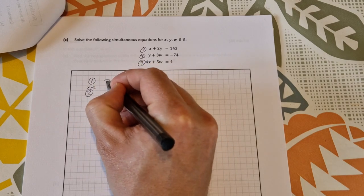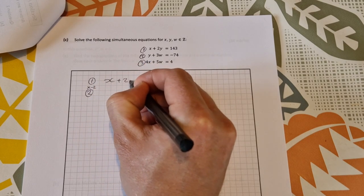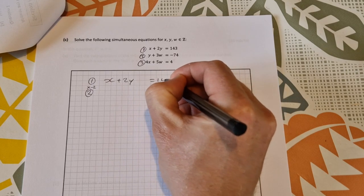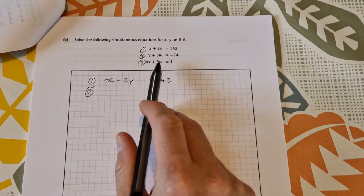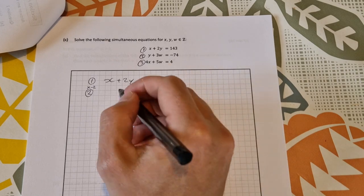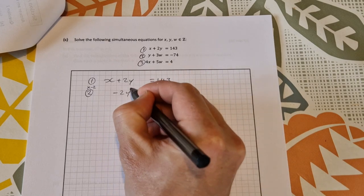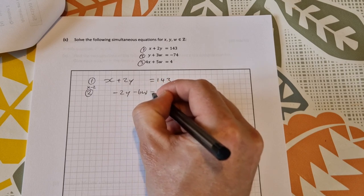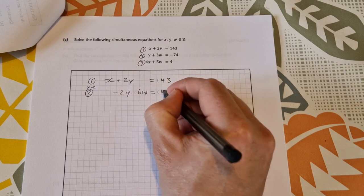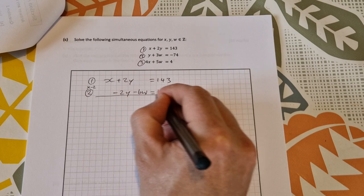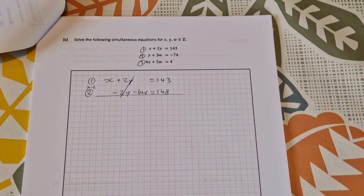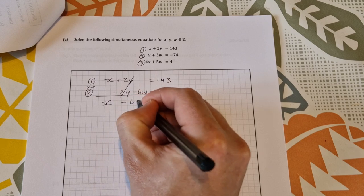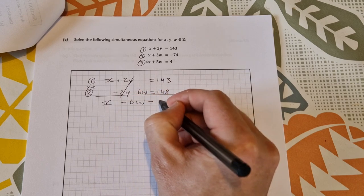So this is equation 1 and equation 2 which is going to be multiplied by minus 2. So that's x plus 2y. I'm just going to leave a little space here for the w equals 143 and then multiplying equation 2 by minus 2 you'll get minus 2y. So they'll cancel out. You'll get minus 6w and that's equal to plus 148. So now you can see that the 2y and the minus 2y cancel out. I'll be left with x minus 6w is equal to 291.